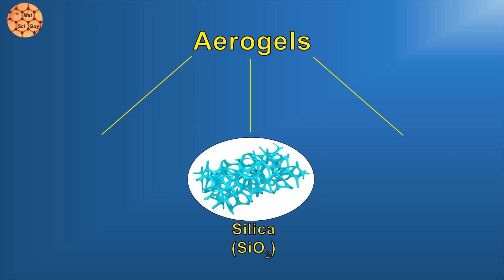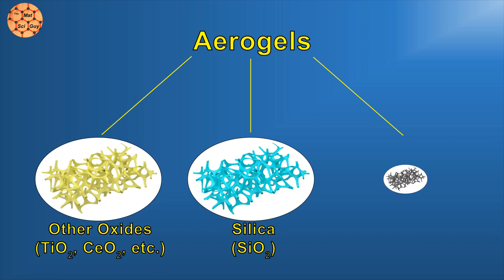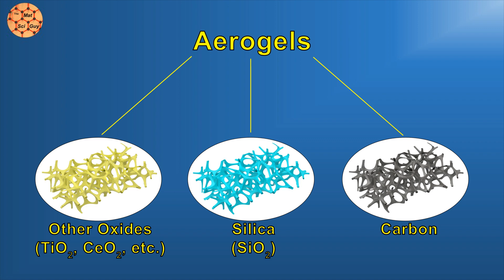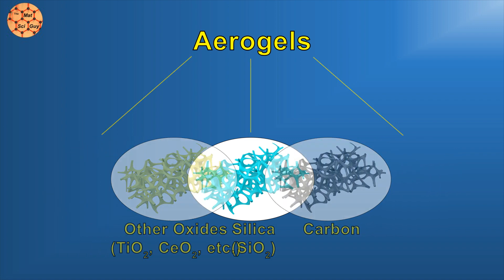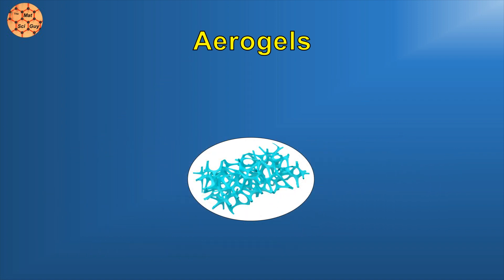Silica aerogels, like the one we saw protecting our flower, are among the most popular. But other oxide or carbon-based aerogels are common as well. Regardless of what the network is, what makes them special is what's in between: the air.